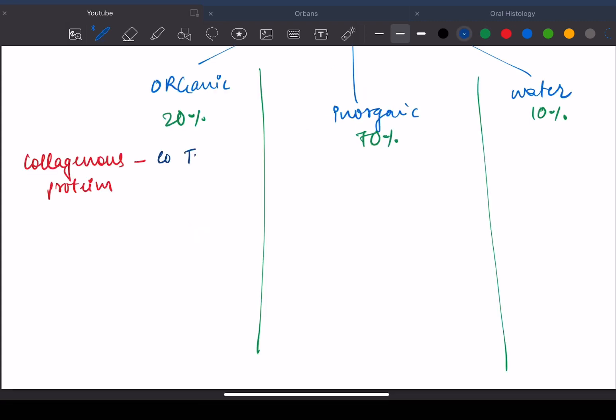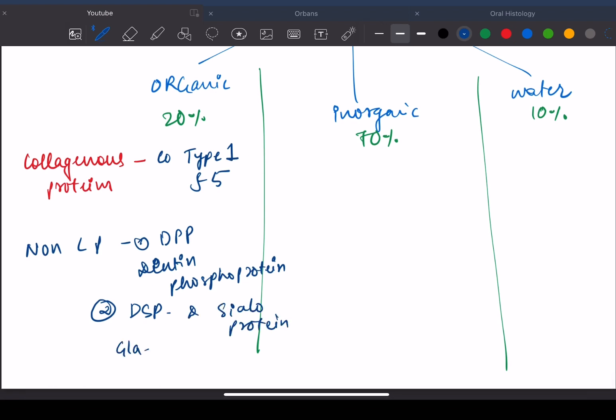Organic matter includes collagen type 1 and type 5. Non-collagenous proteins are DPP which is dentine phosphoprotein. Then we have DSP which is dentine siloprotein, GLA proteins, osteoprotein and osteocalcin.